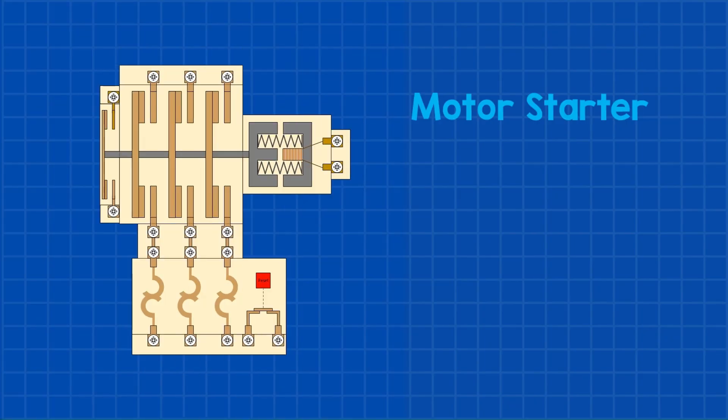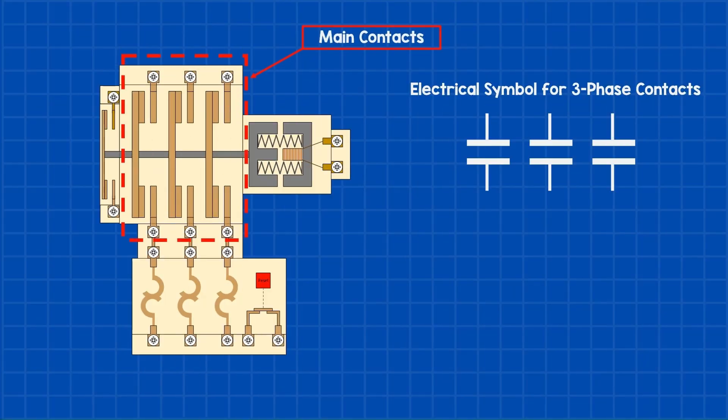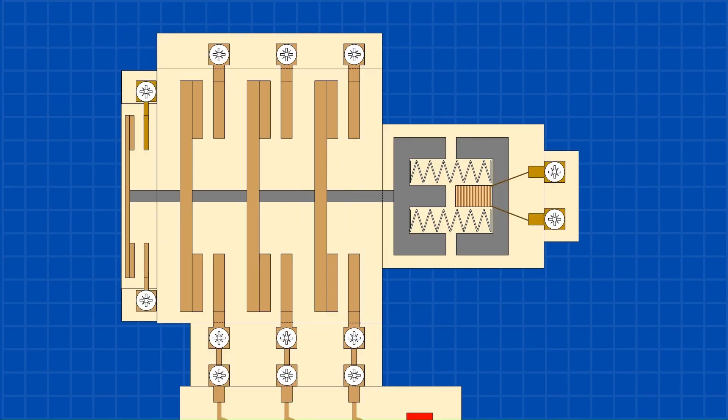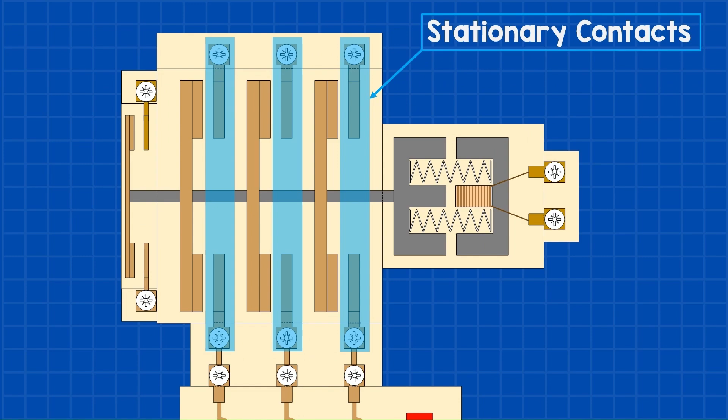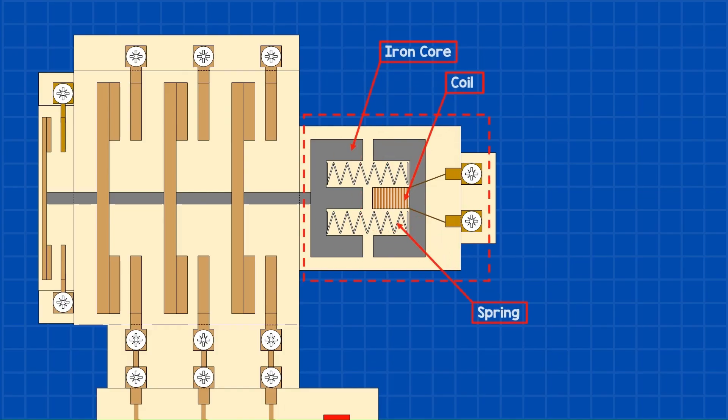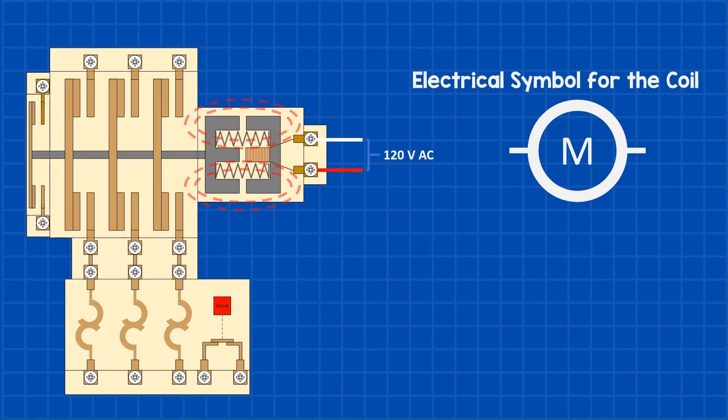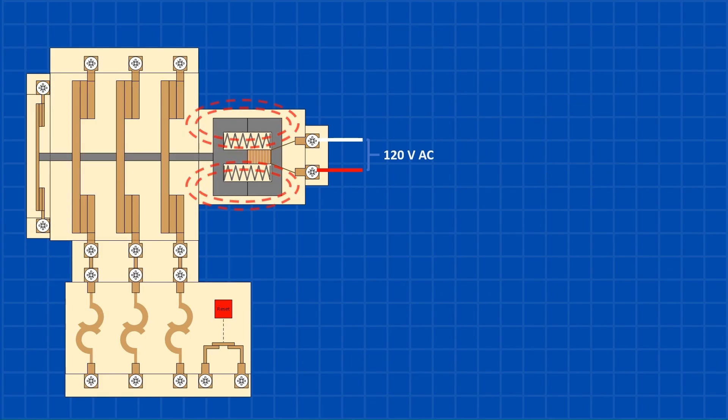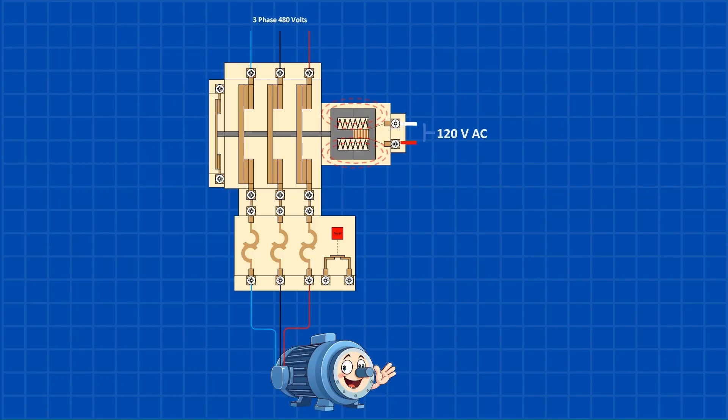But how does a motor starter work? First, the motor starter contains three sets of contacts that deliver power to the motor. Each set of contacts consists of a stationary and a movable contact. The movable contacts are attached to the coil with non-conductive materials like fiberglass or reinforced molded plastic. The coil typically consists of three main components: an iron core, a main coil, and springs. When the correct voltage, 120 volts AC in this case, is applied to the coil, it creates a magnetic field that draws in the iron core. This movement closes the contacts, enabling power to pass through them and the overload elements, which energizes the motor. The motor continues running until power is removed from the coil.